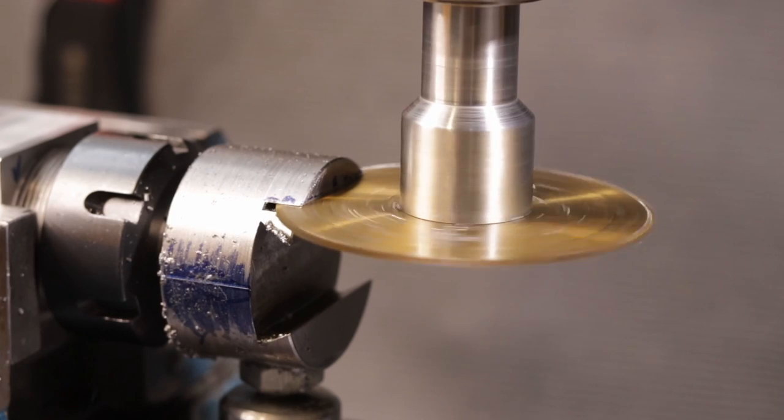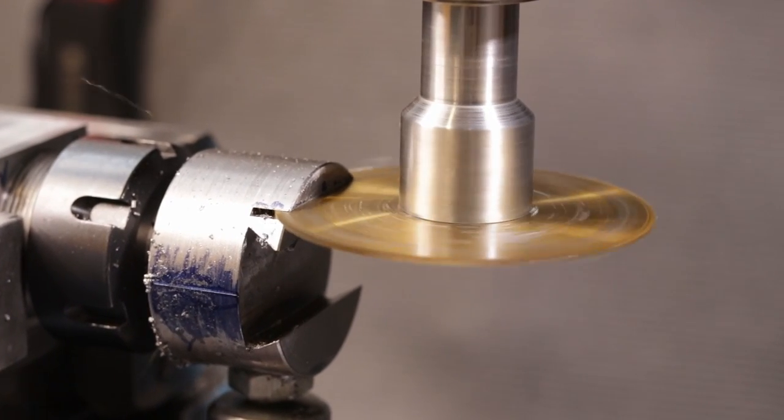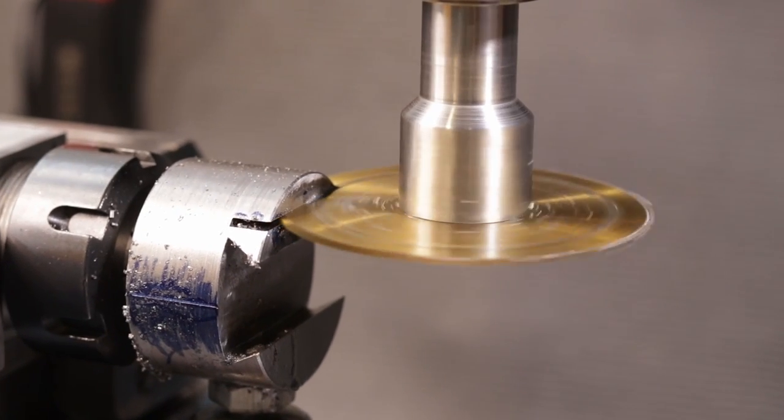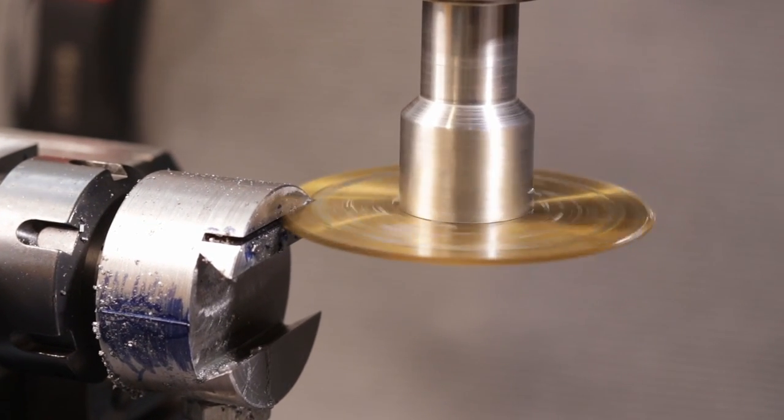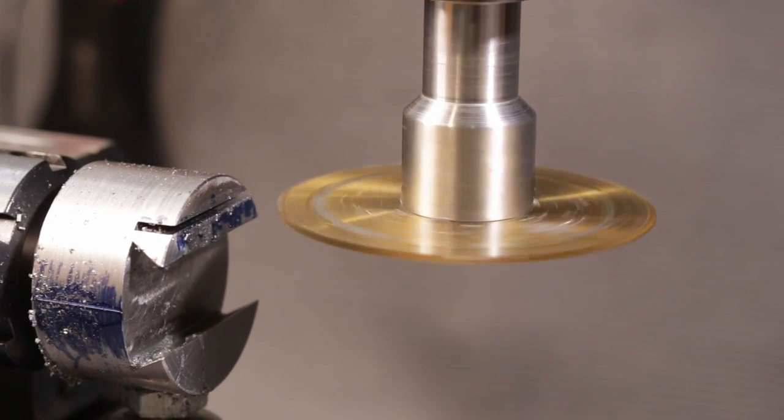But anyway guys, this is the slitting saw arbor complete, and as you can see, it is now already in use on an upcoming project, which is going to be used in the vice build. So I know that video's been a long time coming, but anyway guys, thanks for watching, I've been Mark Howe, and yeah, see you in the next one.